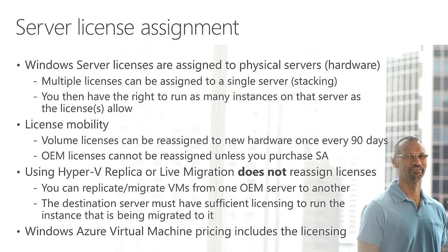Here are some licensing basics. Windows Server licenses are assigned to physical servers — to an actual piece of hardware. This is important to remember even as you virtualize workloads, because licenses are assigned to hardware, not to virtual machines. When you assign a license to a piece of hardware, that defines how many virtual machines you can run on it. You can also assign multiple licenses to a single piece of hardware — called license stacking — which expands the number of virtual machines you can run.